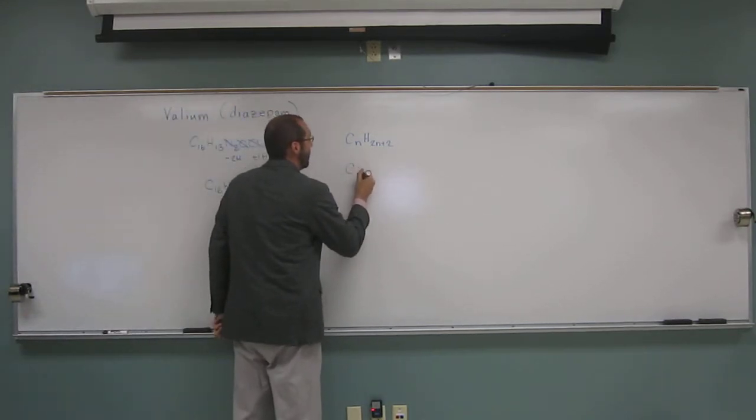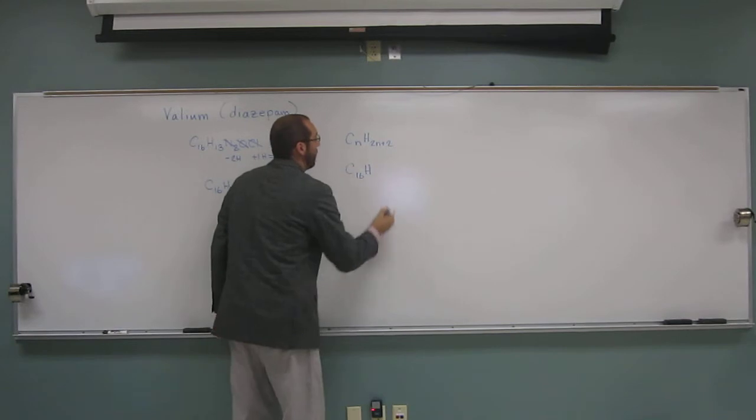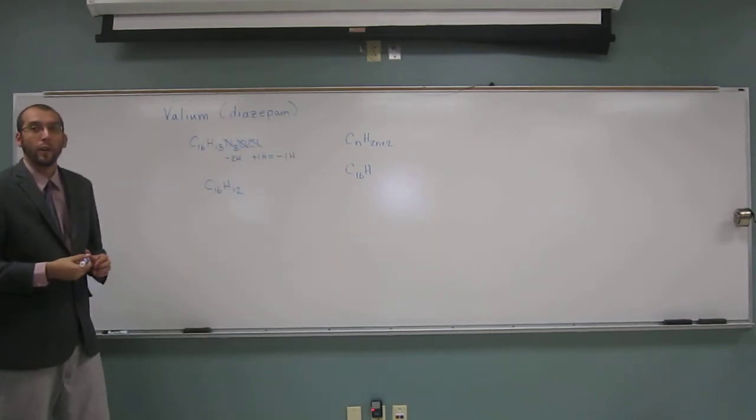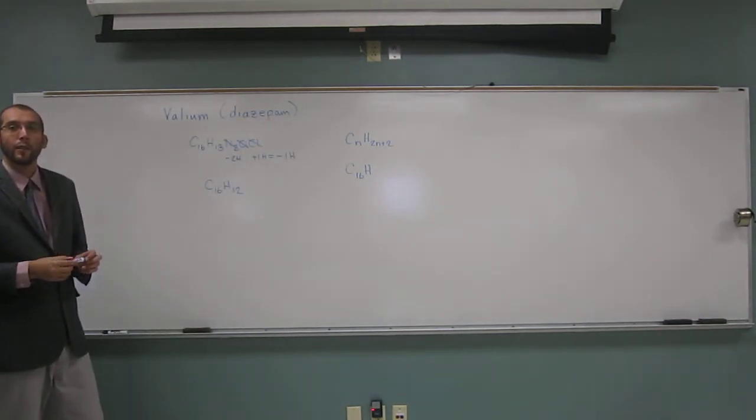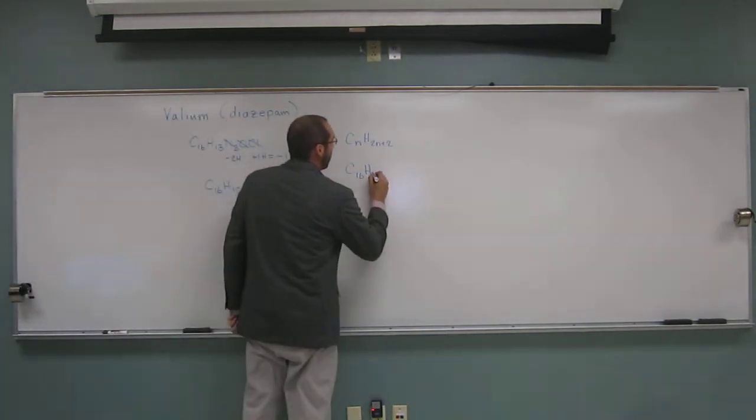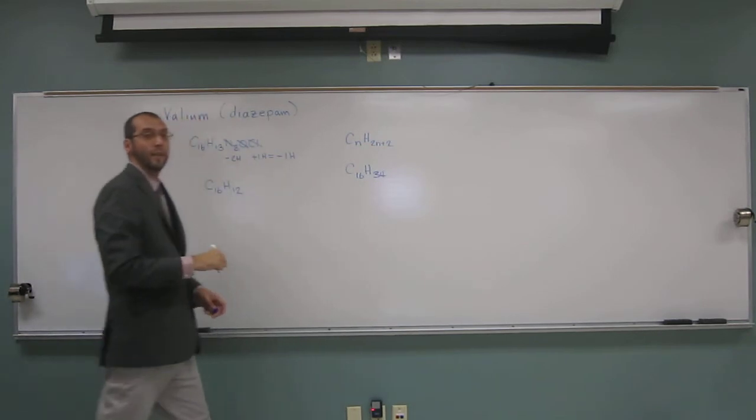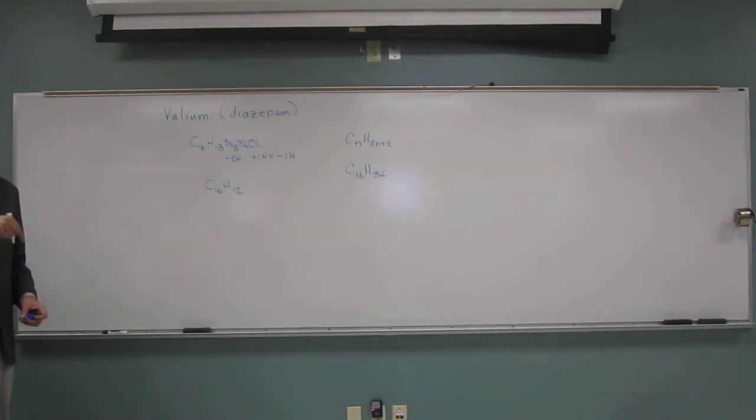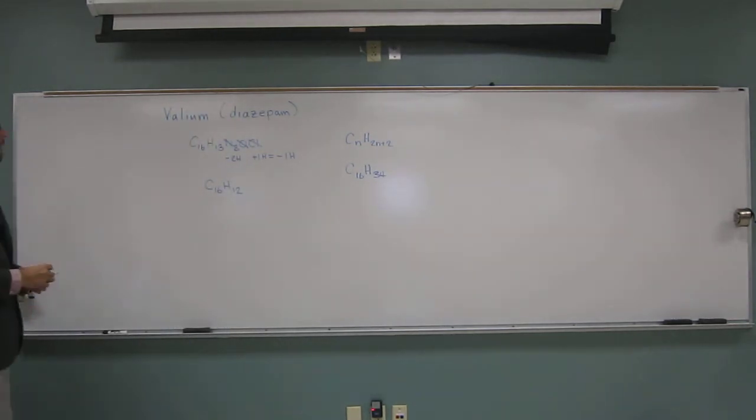we get C16, H what? 2n plus 2. So what is that? 34, right? Because 16 times 2 is 32 plus 2 is 34, right?